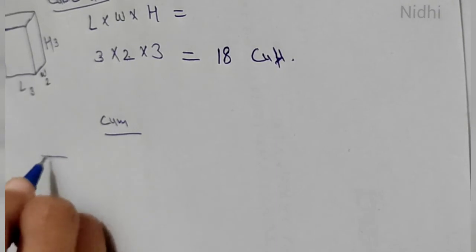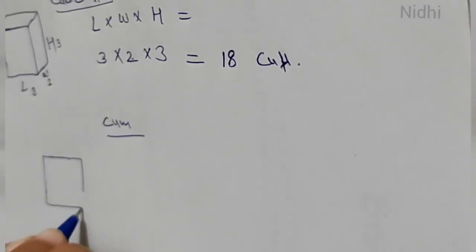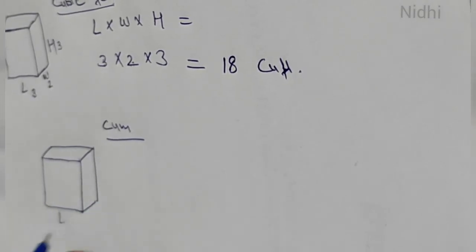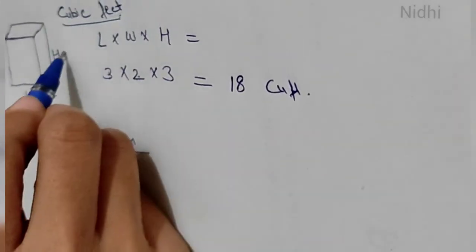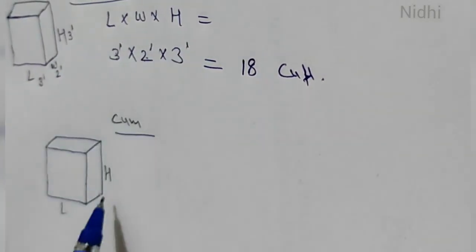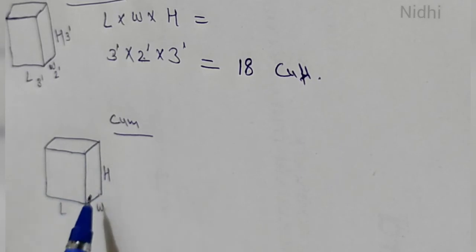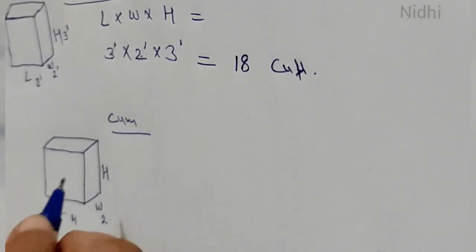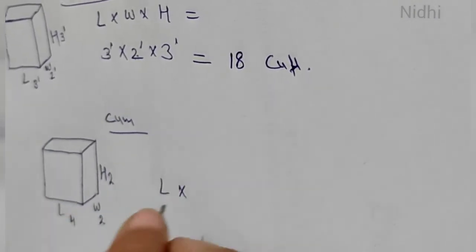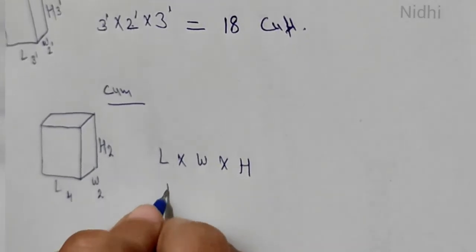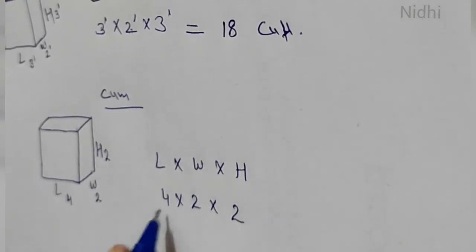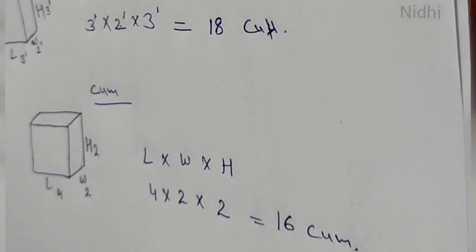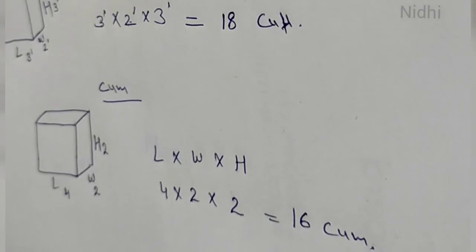For cubic meter, again we need three dimensions — length, width, and height — but the dimensions must be in meters. Here length is four meters, width is two meters, and height is two meters. So: four times two is eight, eight times two is sixteen cubic meters. If you have any dimension in inches, first you have to convert inches into meters.